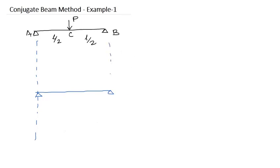Now we have to draw the M by EI diagram. What is the bending moment at the midpoint? This value is P by 2, P by 2, so the moment at the midpoint will be P by 2 into L by 2. This is PL by 4 and it will be linear.